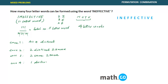Case four — one distinct and three same — is also possible because we have three E's. So these are the total cases when choosing four letters from the word 'ineffective'. Note that case four should logically come right after case one.